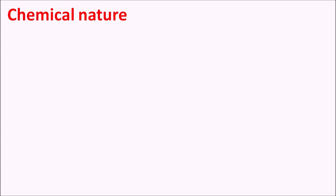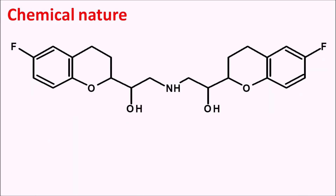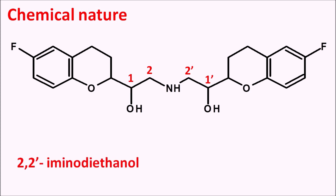First of all, what is the chemical nature of this drug? This is the structure of nebivolol. Since it is a beta blocker, it has the ethanol amine side chain. Here we can number this as 1 and 2 — it is an ethanol chain attached with the amine. But this amine is further attached so that it becomes an imine. We can find this is 1 prime and 2 prime, so simply to say diethanol which forms an imine. We can write this as 2 and 2 prime iminodiethanol.